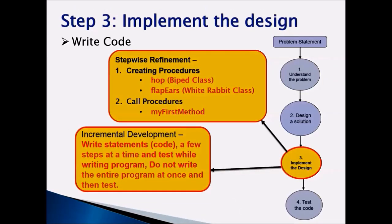We take our design into Step 3 to implement it. We are going to do a step-wise refinement on our code — creating procedures and then calling procedures. We will create a hop procedure so the White Rabbit knows how to hop. Since White Rabbit is a biped, we create a biped class procedure so all bipeds can hop. The second procedure, flap ears, we create for the White Rabbit class instead of biped, since bipeds don't have ears. Once we create these two procedures, we call them in my first method to test if they work correctly.